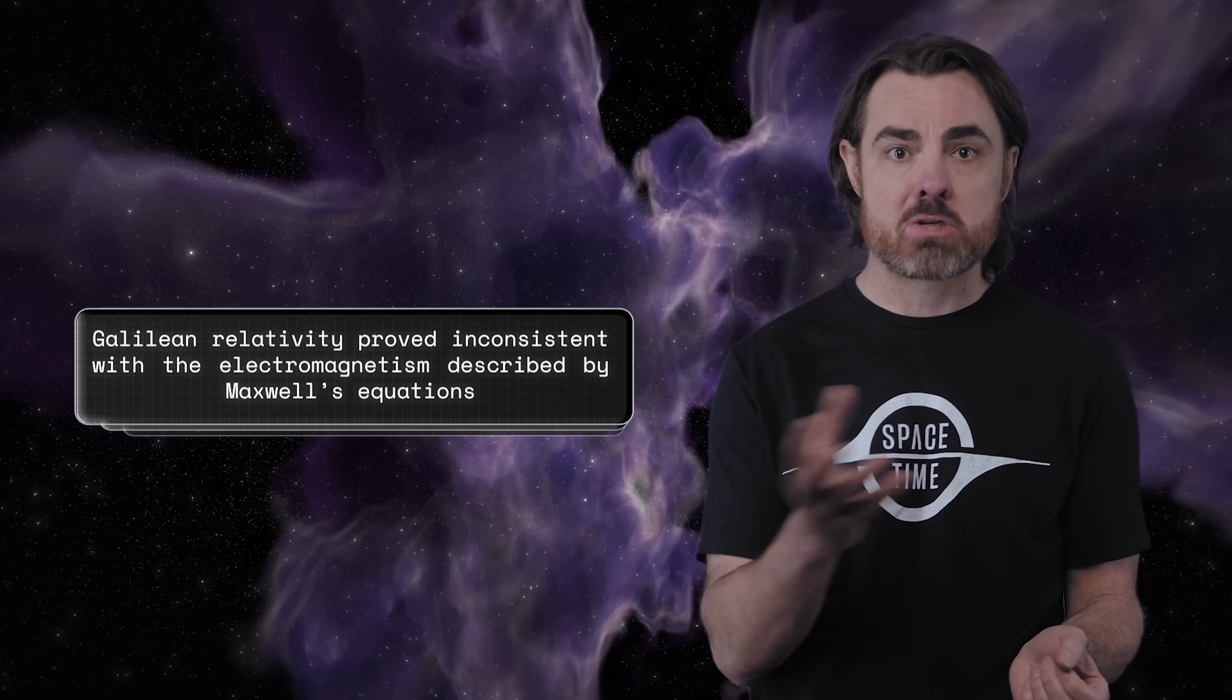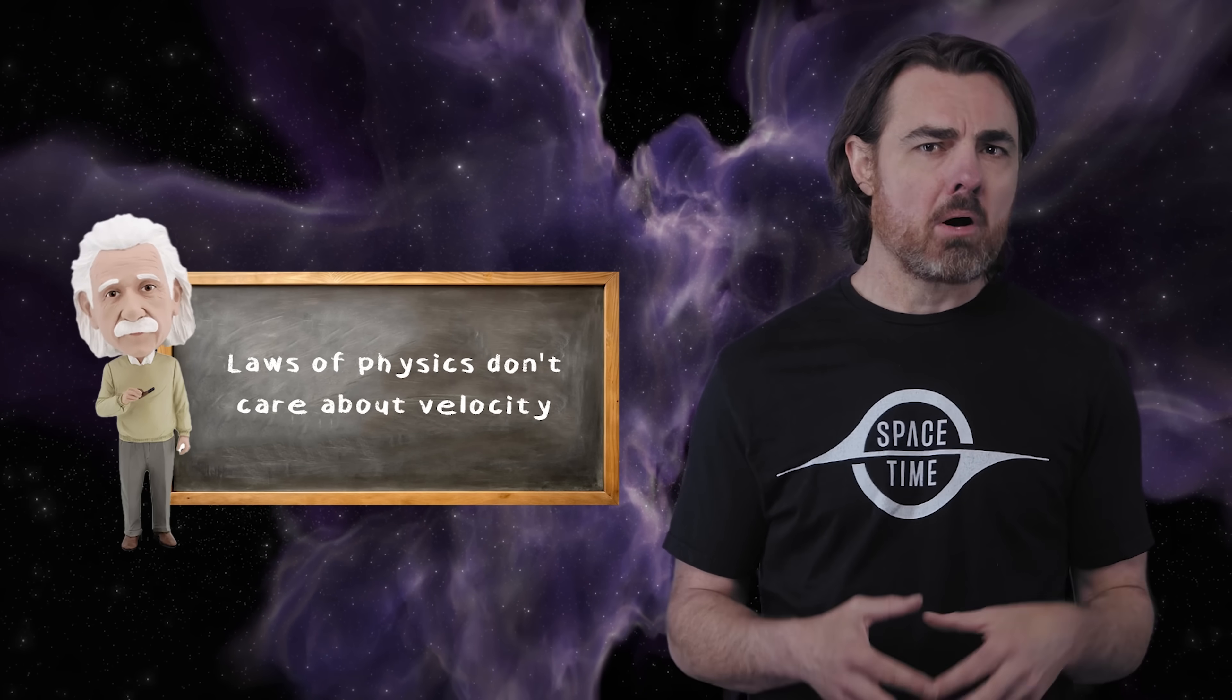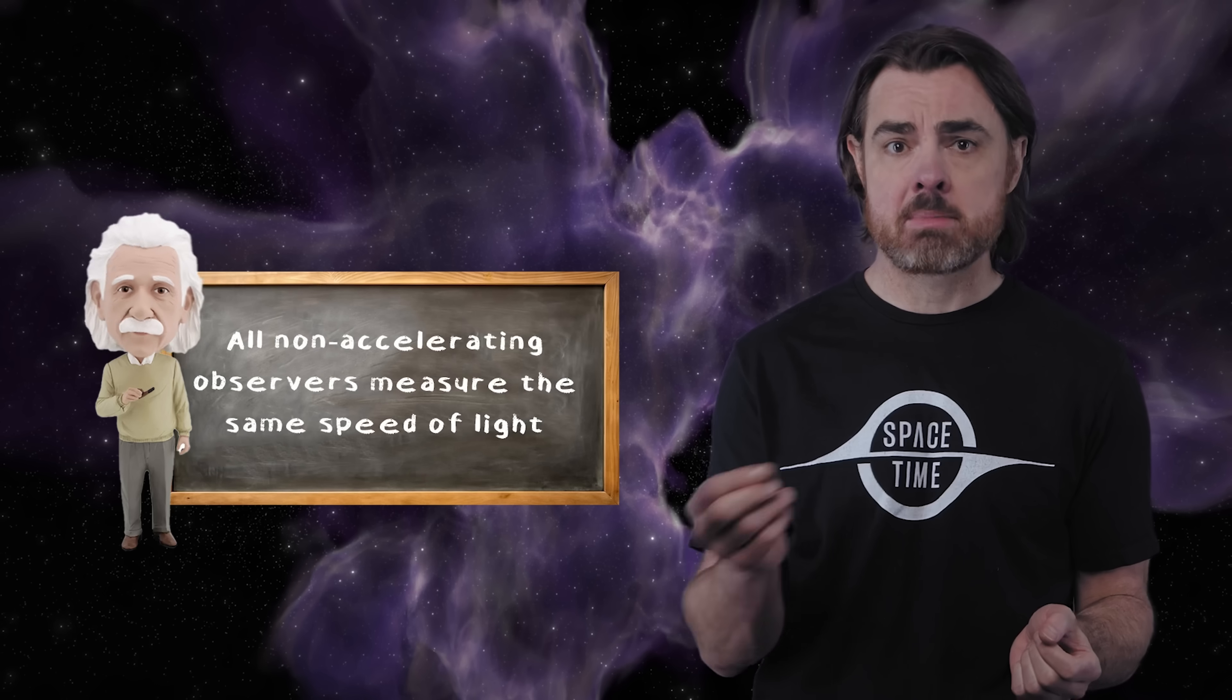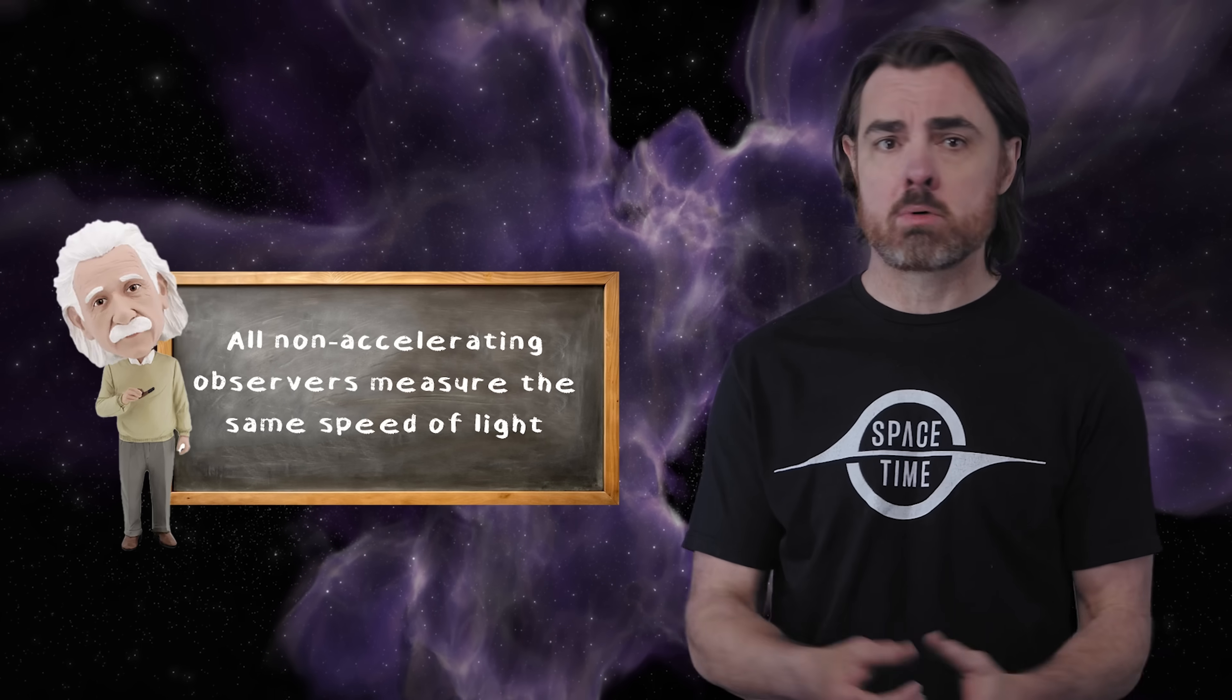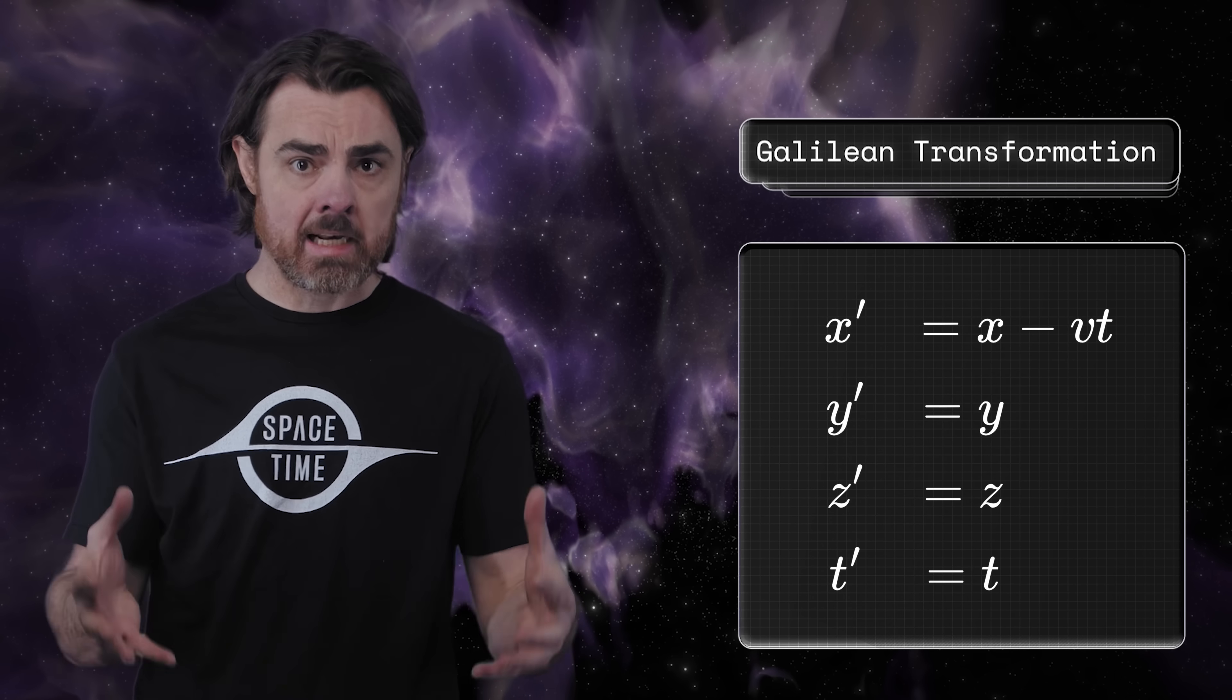This means that you can define any reference frame as having zero velocity and describe all motion with respect to that frame. There's no preferred notion of stillness in Galilean relativity. Galilean relativity was the basis for Isaac Newton's mechanics a half century later, which changed all the physics. But Galilean relativity had its glitches. For example, it proved inconsistent with electromagnetism as described by Maxwell's equations in the mid-1800s.